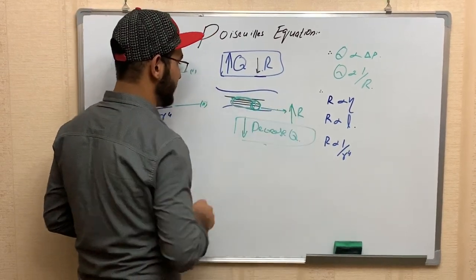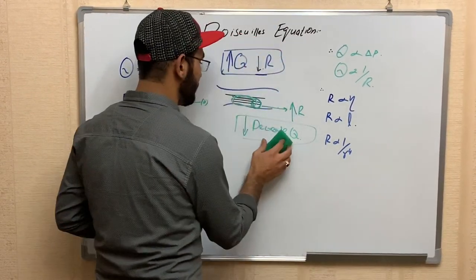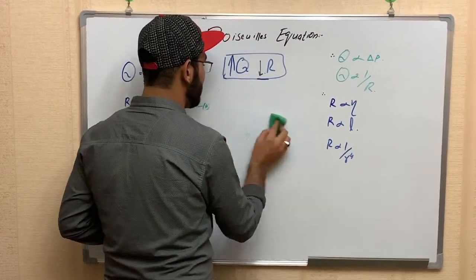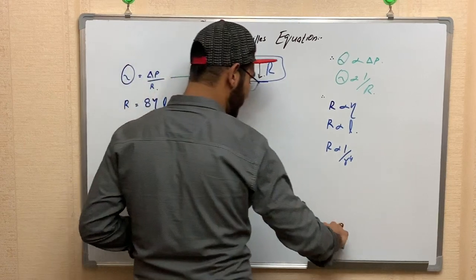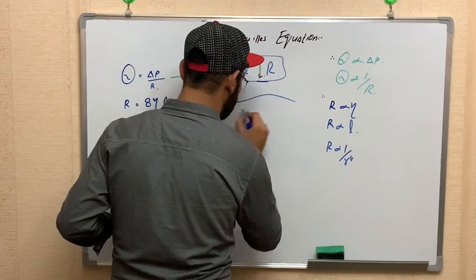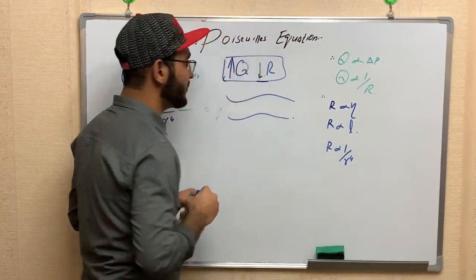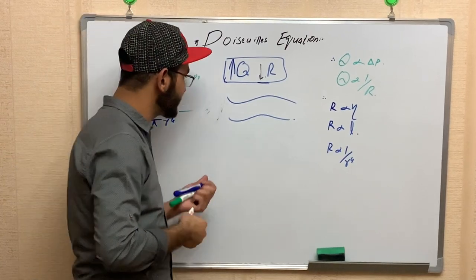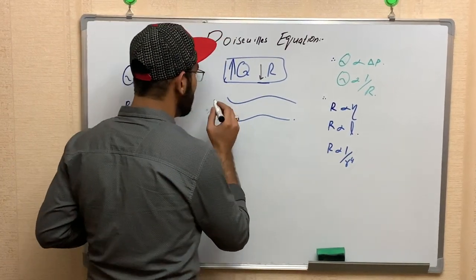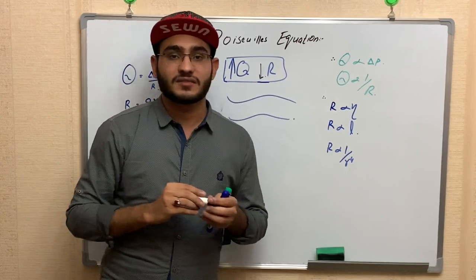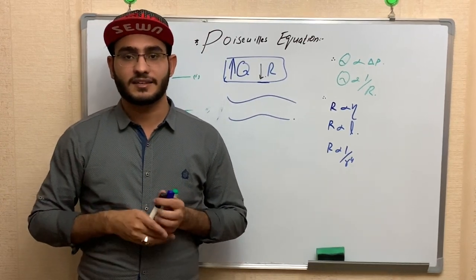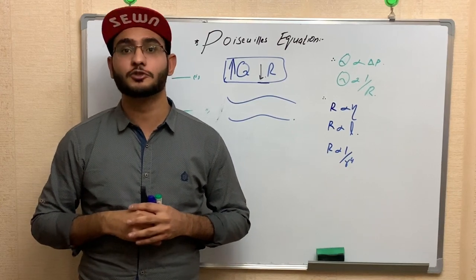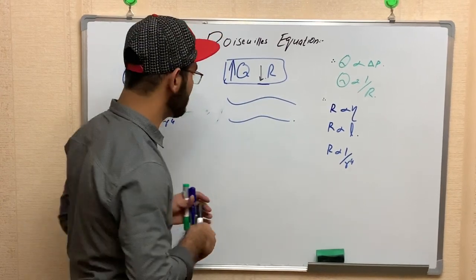When there is a low value of resistance, the flow of blood increases. However, when the flow of blood increases too much, it becomes very difficult for tissues to capture their nutrients.